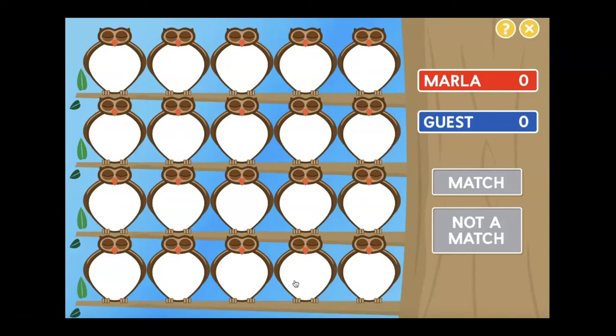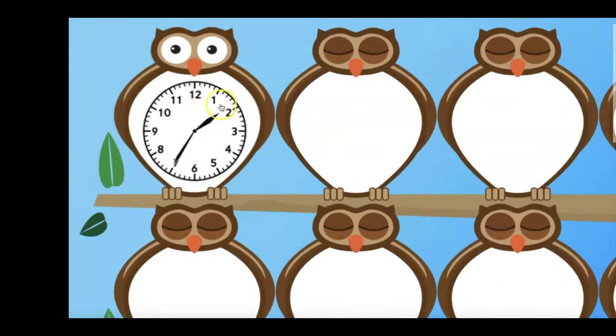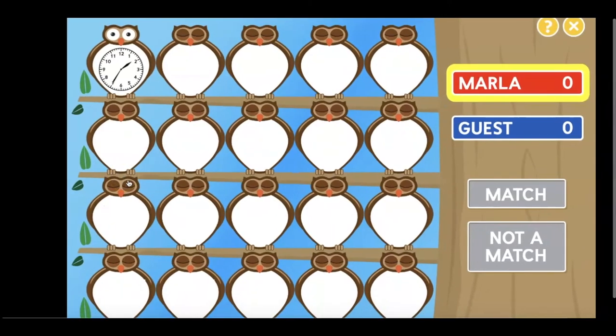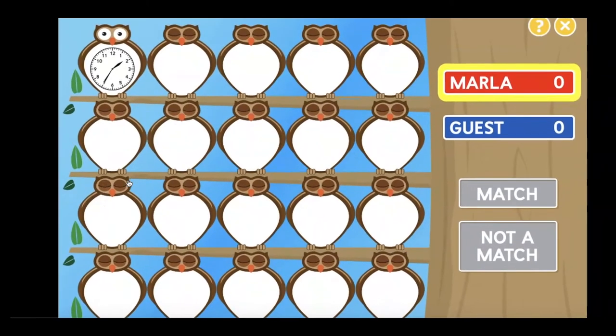Click two owls. Do the owls match? Click Match or Not a Match. So this is a game that really involves a good memory. I'm going to tap on two owls. That first owl says 1:35. So now I need to find 1:35.